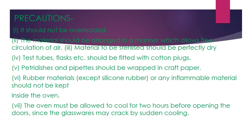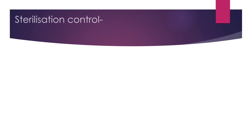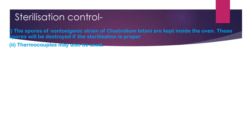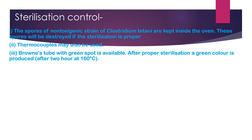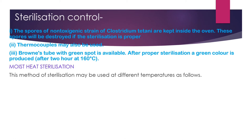For sterilization control, the spores of a non-toxigenic strain of Clostridium tetani are kept inside the oven — these spores will be destroyed if sterilization is proper. Thermocouples may also be used. Brown's tube with a green spot is available; after proper sterilization, the green color is produced.